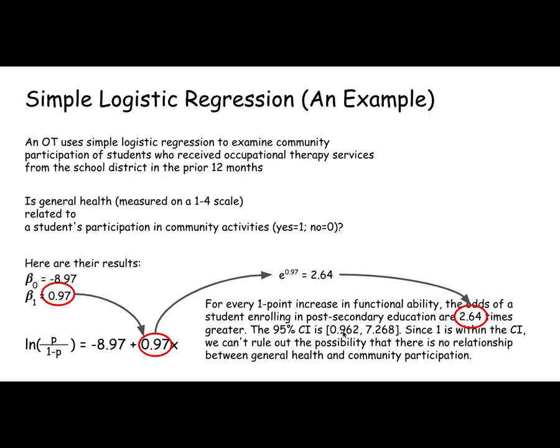And since one is inside that confidence interval, they can't rule out the possibility that there really is no impact of general health on a student's participation. With 95% certainty, the community participation varies.